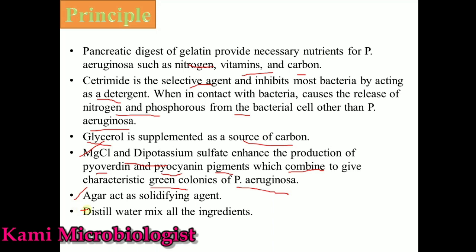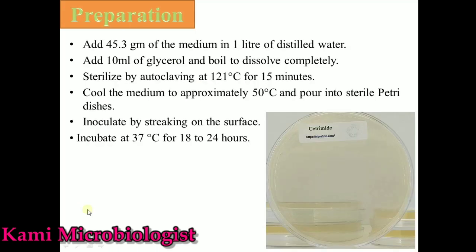Now let's talk about preparation. First, we add 45.3 grams of the medium into one liter of distilled water, then add 10 ml of glycerol and boil to dissolve completely. After that, sterilize it using an autoclave at 121 degrees Celsius for 15 minutes. After sterilization, allow the media to cool to 50 degrees Celsius and pour into sterilized Petri plates.